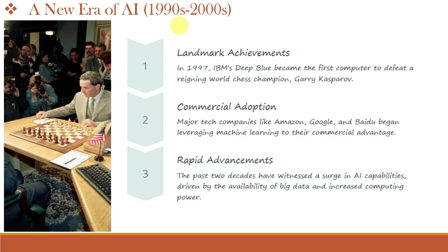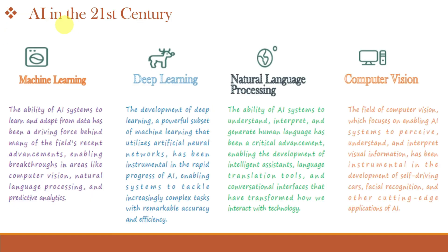The period of the 1990s and 2000s can be called the rebirth of AI, because very important milestones were achieved. In 1997, IBM's Deep Blue computer became the first computer to defeat world chess champion Gary Kasparov. Consequently, major tech companies like Amazon and Google started to adopt AI for their commercial advantage. Also, due to the availability of big data and increasing computing power, rapid advancements took place in artificial intelligence in the last two decades.